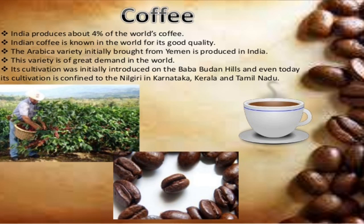Coffee: India produces about 4% of the world's coffee. Indian coffee is known worldwide for its good quality. The Arabica variety, initially brought from Yemen, is produced in India and is in great demand in the world. Its cultivation was initially introduced on the Baba Budan hills, and even today its cultivation is confined to the Nilgiris in Karnataka, Kerala and Tamil Nadu.